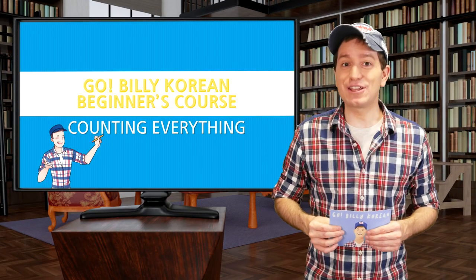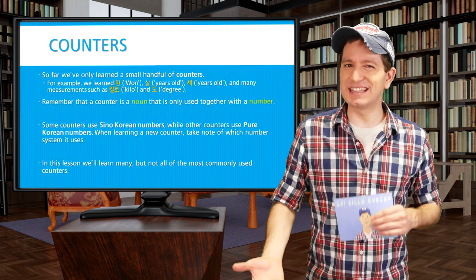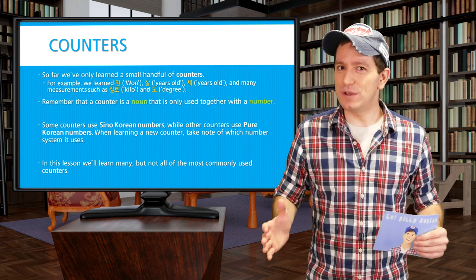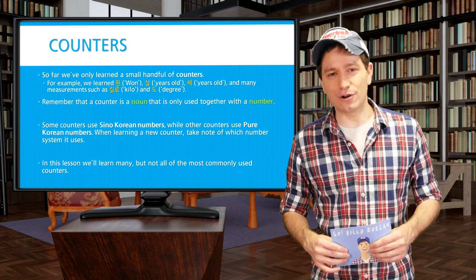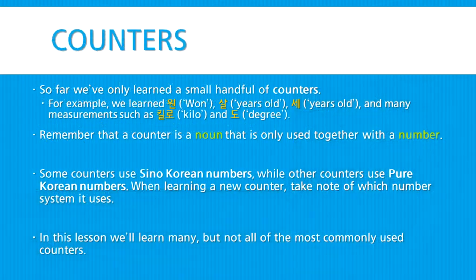Welcome back. We've just learned how to use Sino-Korean numbers as well as pure Korean numbers. Now let's focus a little bit more on counters. We've so far only learned a small handful of counters that we can use — for example, 원 for counting money, 살 or 세 for counting your age, as well as some measurements like kilo for kilogram or 도 for degrees. Remember that a counter is a noun that is only used together with a number, and some counters will use Sino-Korean numbers while others will use pure Korean numbers. So when you're learning a new counter, take note of which number system it uses.